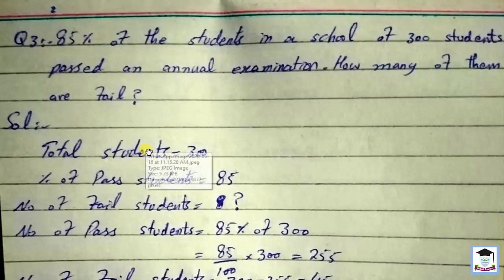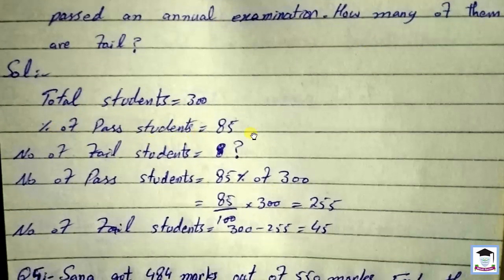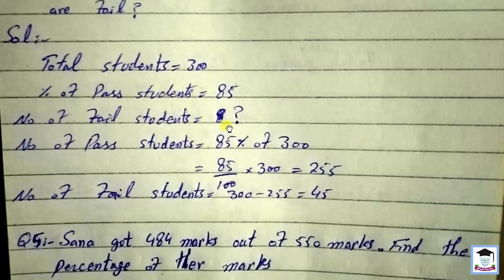Question number 3: 85 percent of the students in a school of 300 students passed an annual examination. How many of them failed? Total students: 300. Percentage of passed students: 85.